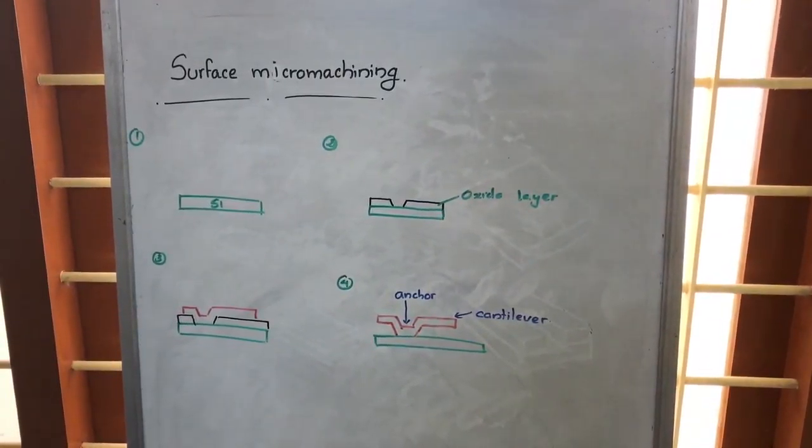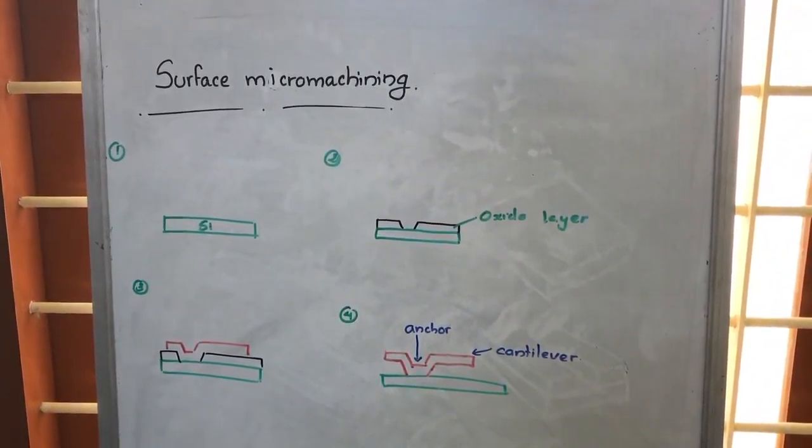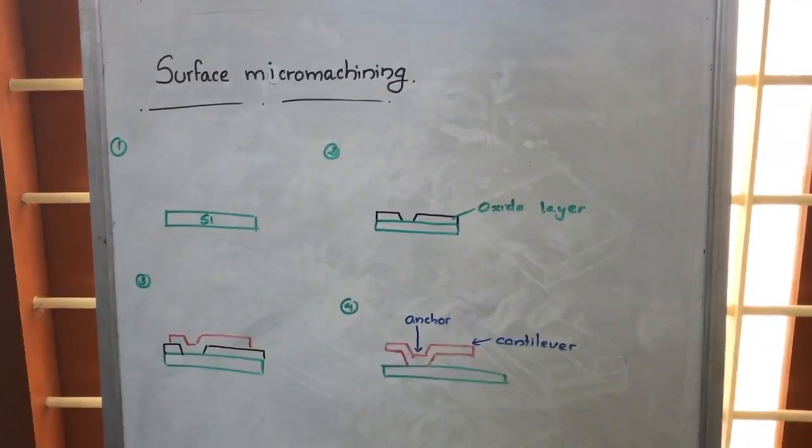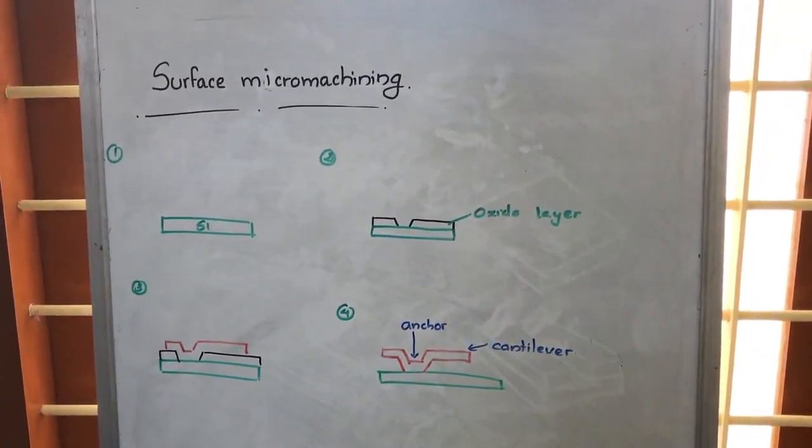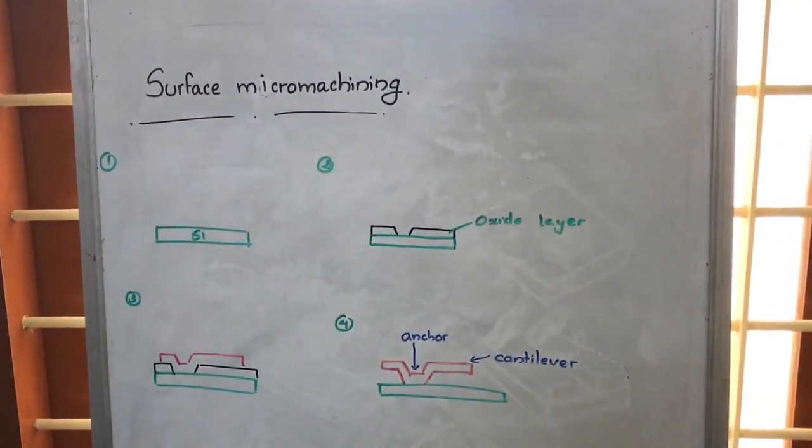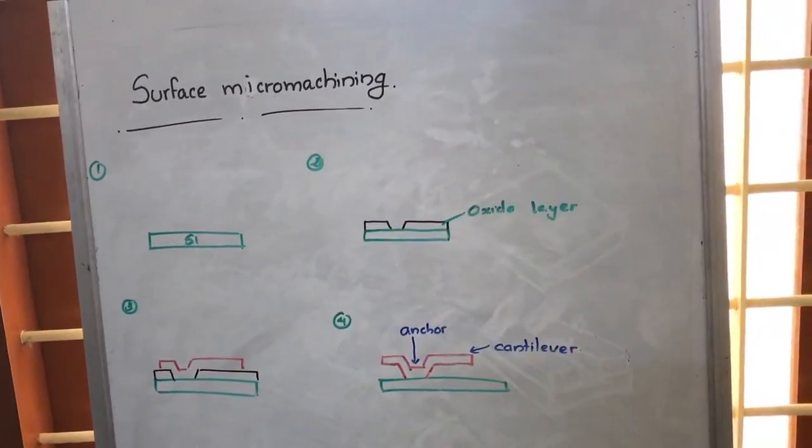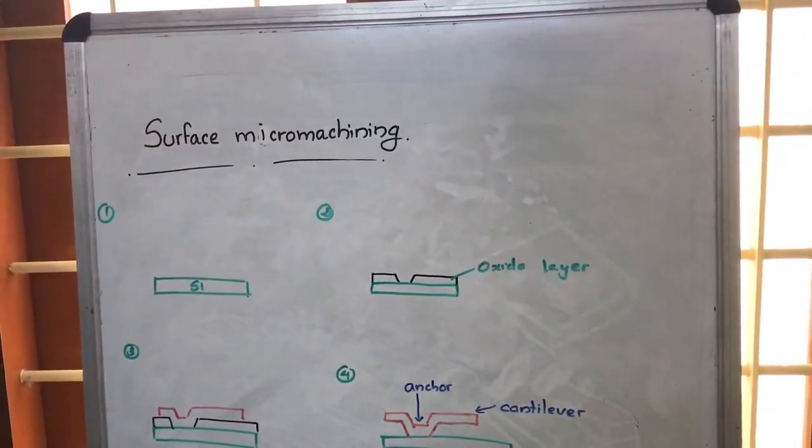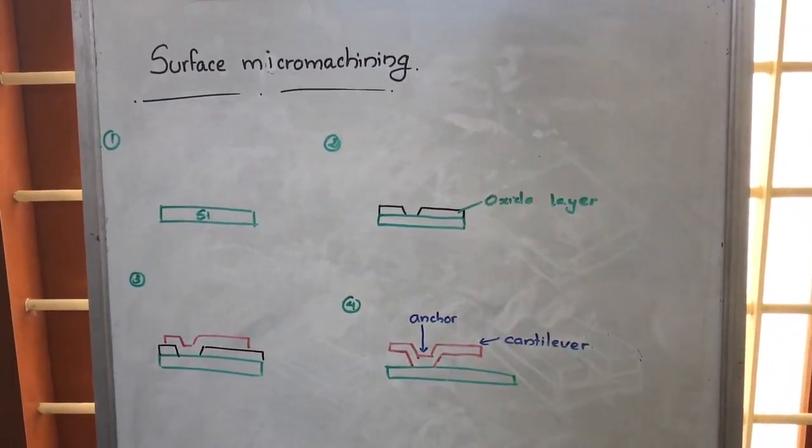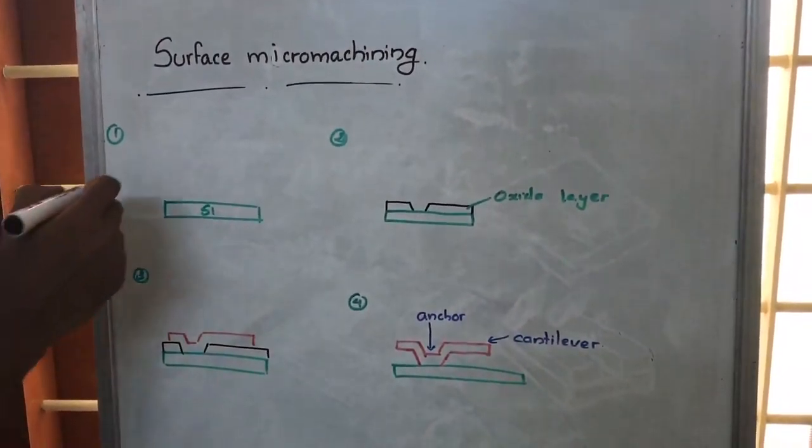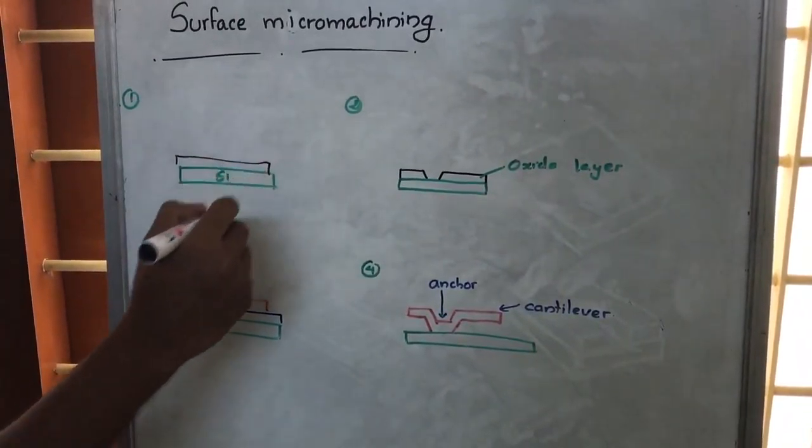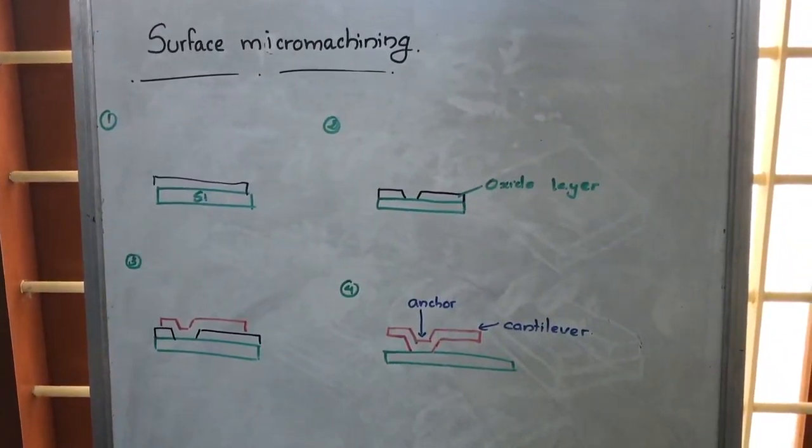Surface micromachining is a combination of several steps. By using these steps, we are able to develop cantilever structures. This combination of steps is called surface micromachining. Here, what we do is we'll be having a silicon wafer, and first we will be placing a layer of silicon oxide over it.